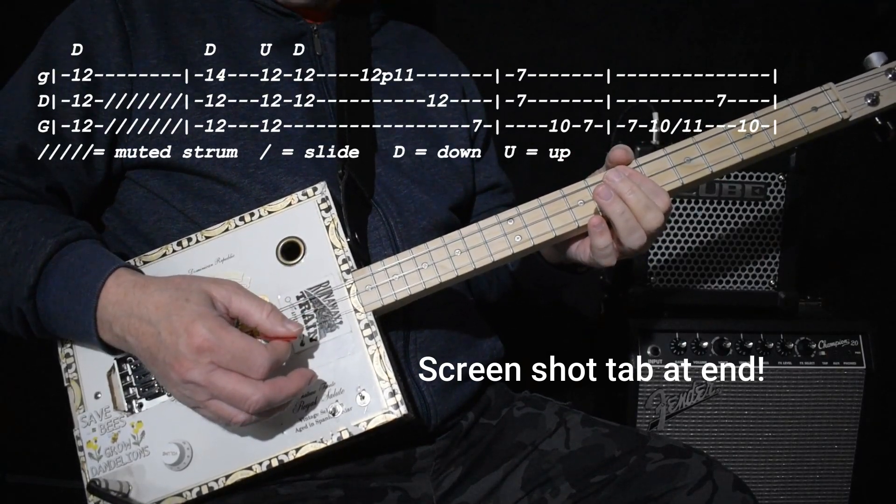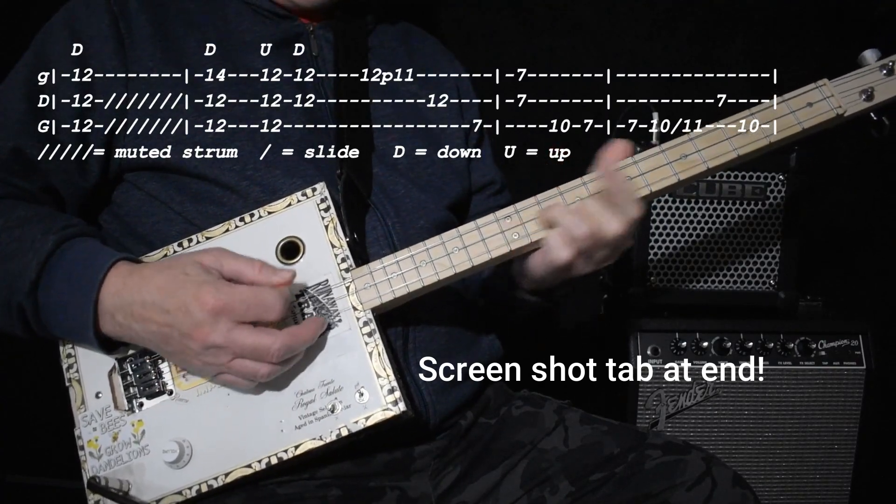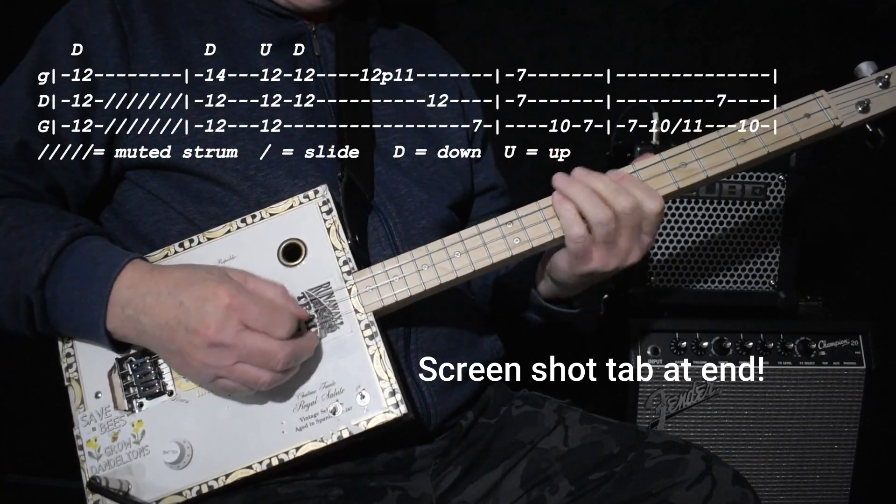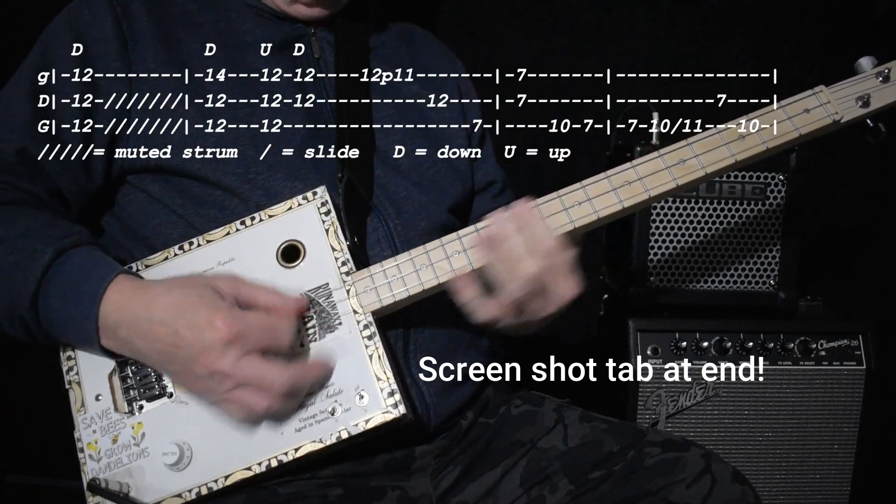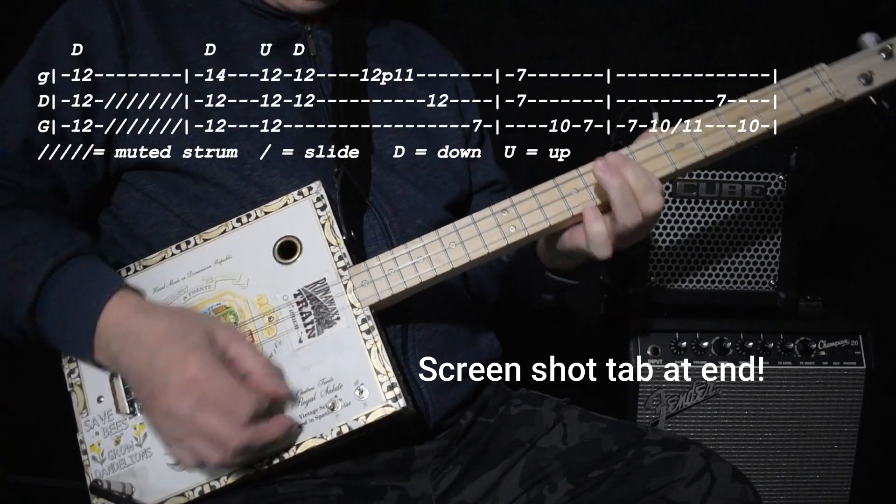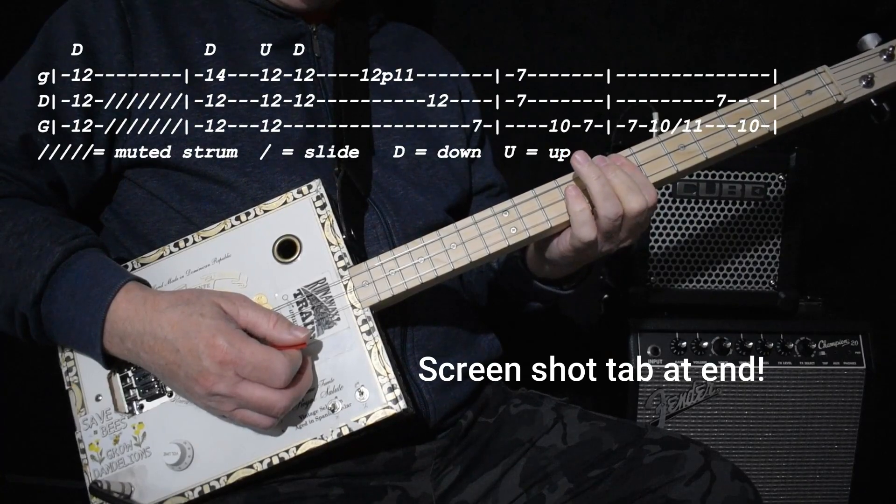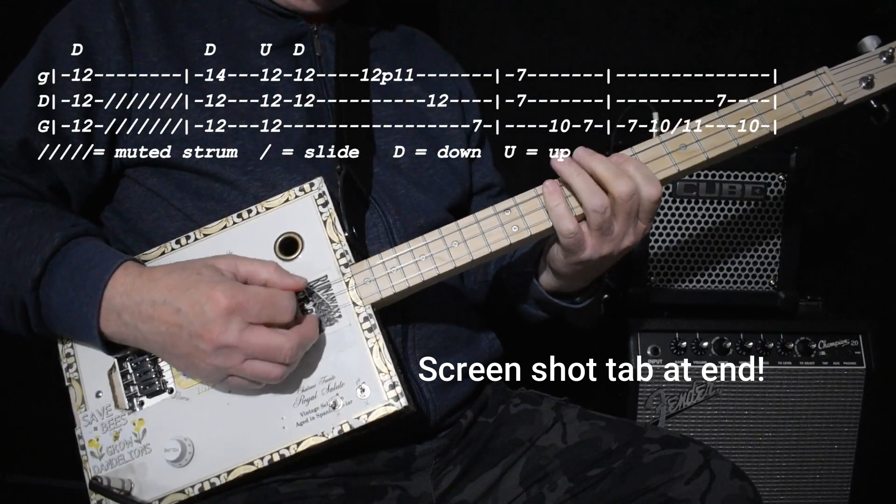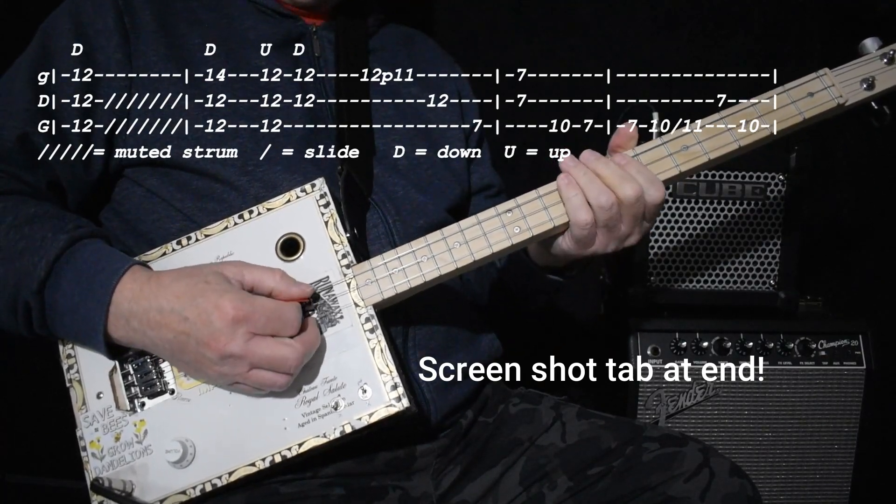So I'll play that whole thing for you really slow. [plays slowly] So when you've done it the first time, [plays] you go right back. [plays] And you stop right there. You don't have to do that ten, seven, or that ten, 11, ten, seven.